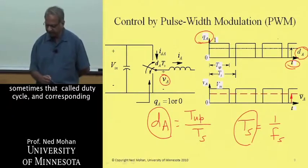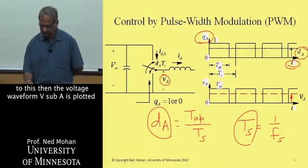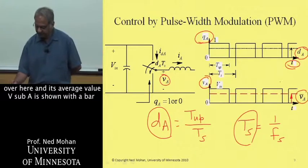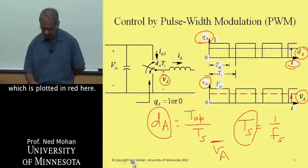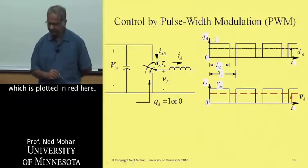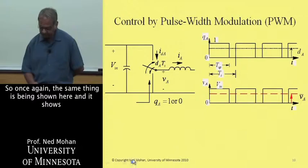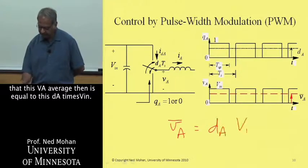And corresponding to this, then the voltage waveform V sub A is plotted over here, and its average value V sub A is shown with a bar on top to show that this is an average value, which is plotted in red here. So once again, the same thing is being shown here, and it shows that this V A average then is equal to this dA times V N.